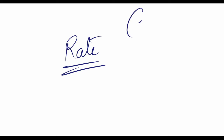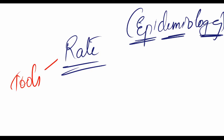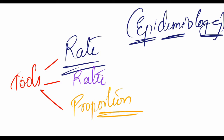Welcome back. Today let's look at something mathematical. We'll study about rate. Rate is one of the most important tools when you are studying epidemiology — the study among people. The tools used in epidemiology include rate, ratio, and proportion.